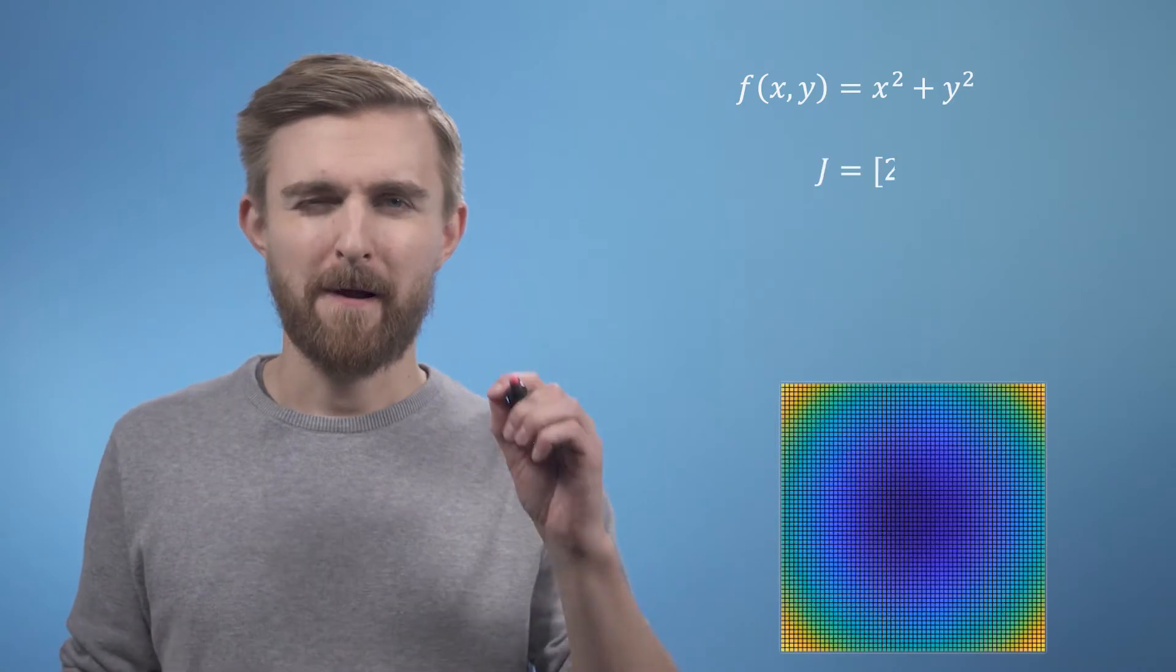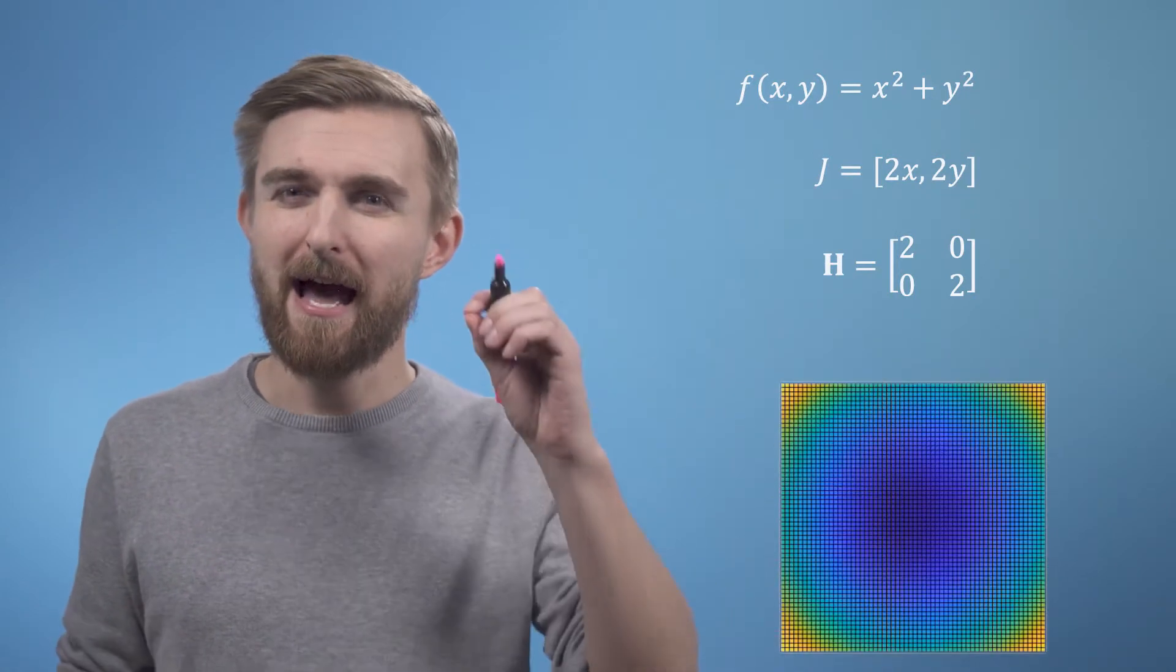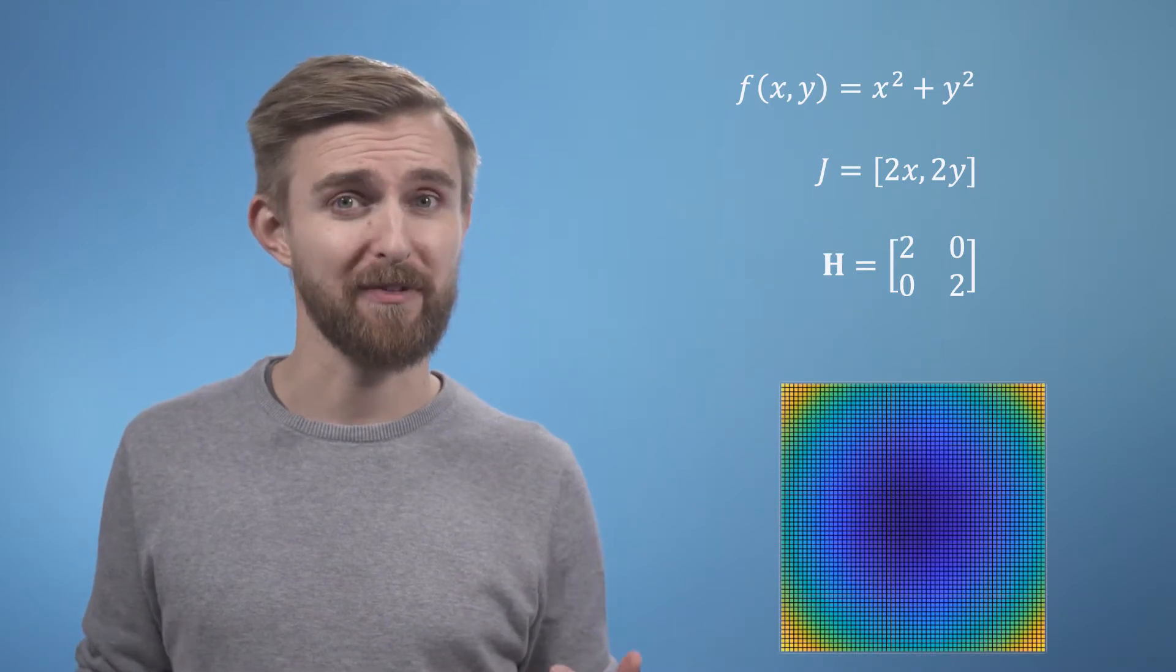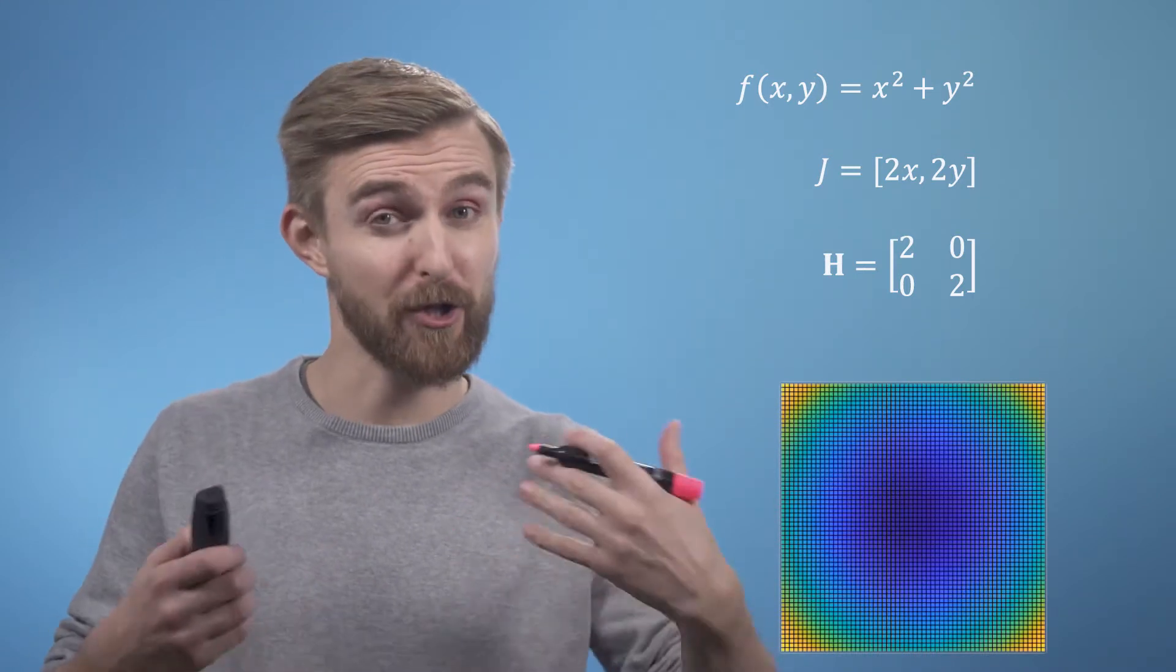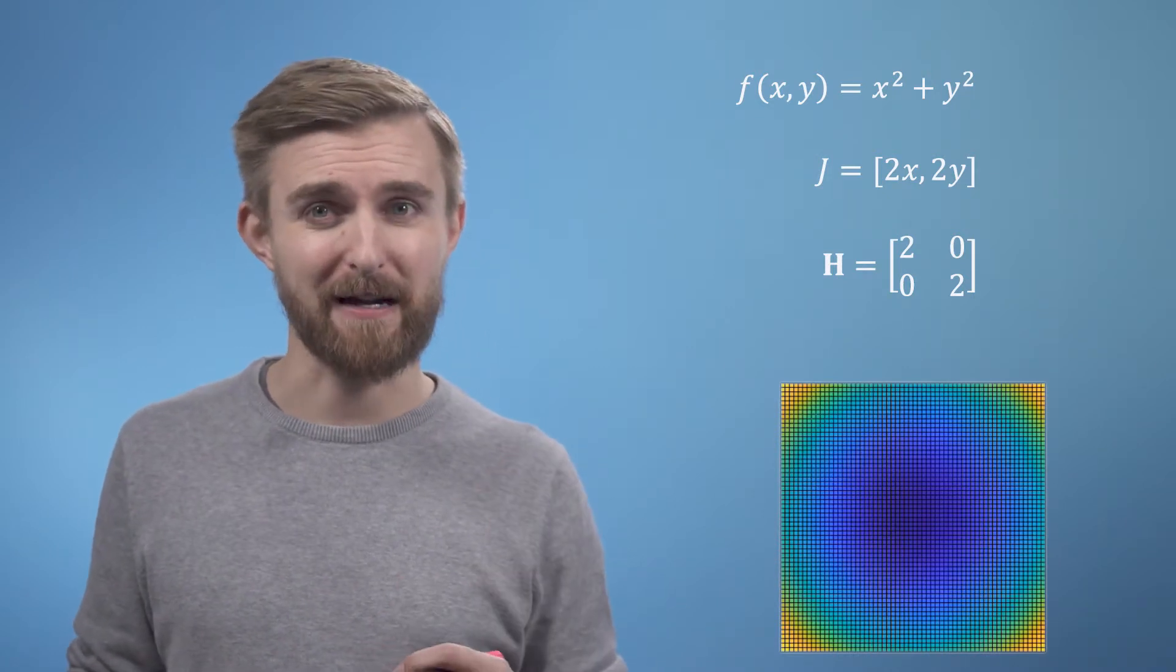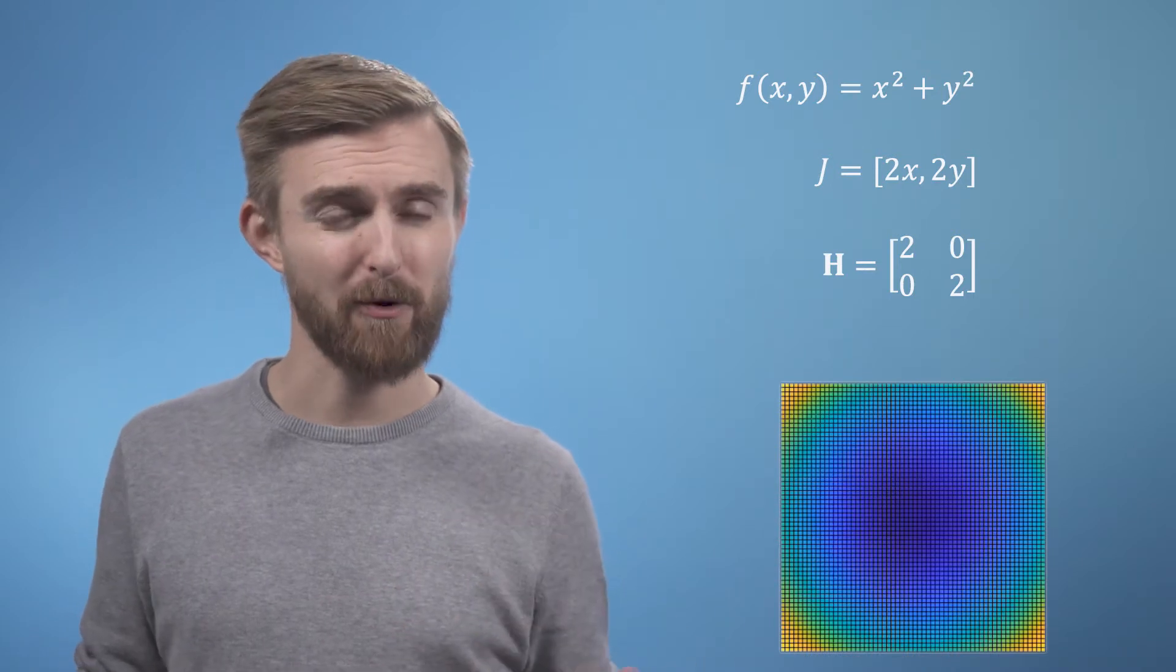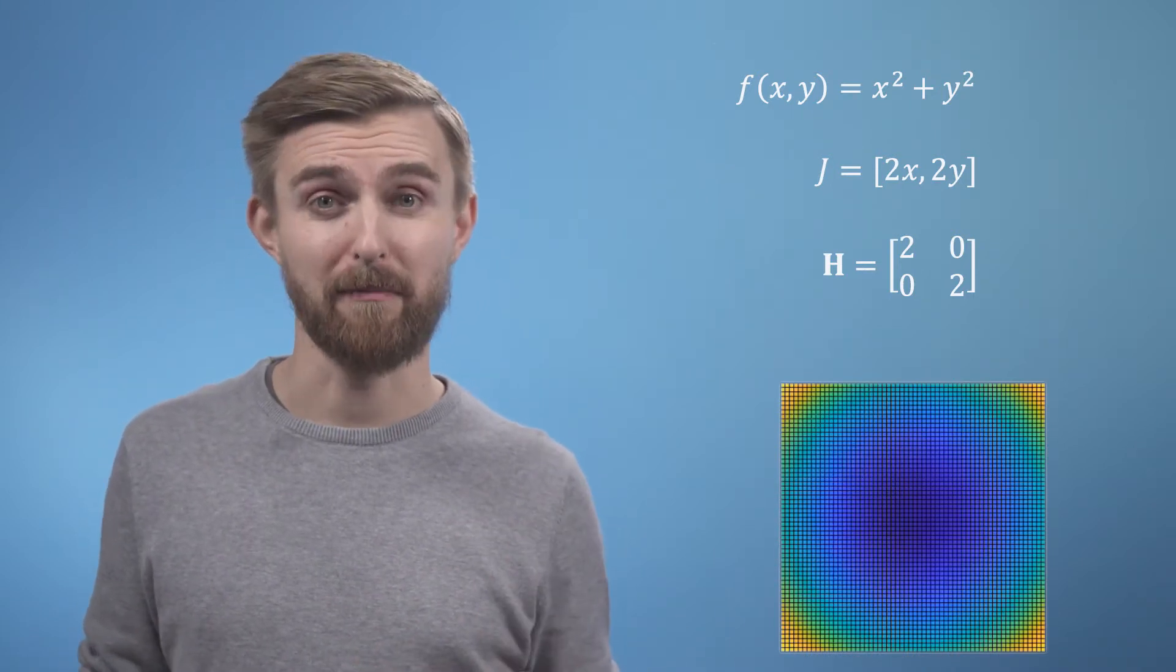Consider the simple function f of x and y equals x squared plus y squared. Calculating the Jacobian and the Hessian are both fairly straightforward, and hopefully you could have visualized how this function would have looked in your head. However, if you hadn't known what function we were dealing with and calculated the value of the Jacobian at the point 0, 0, you'd have seen that the gradient vector was also 0.